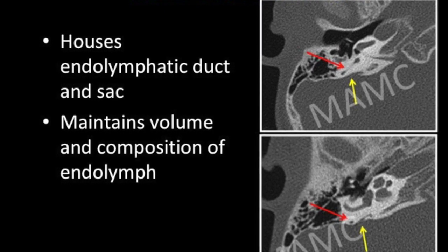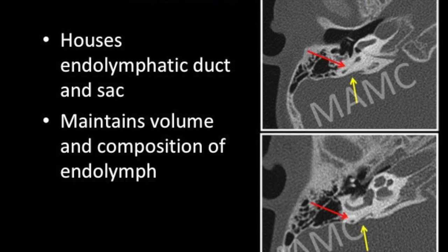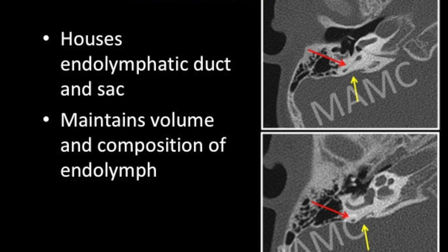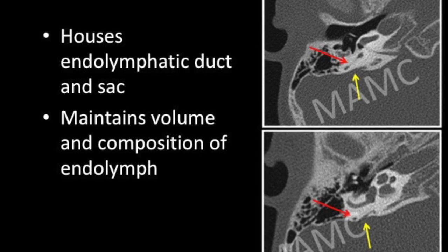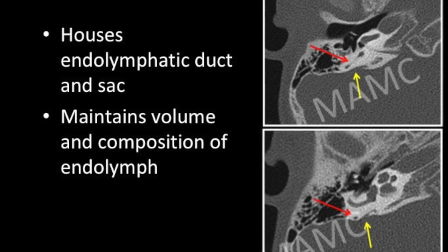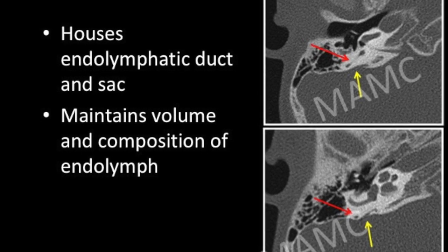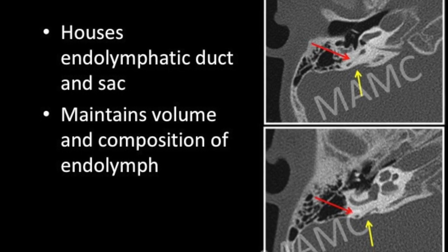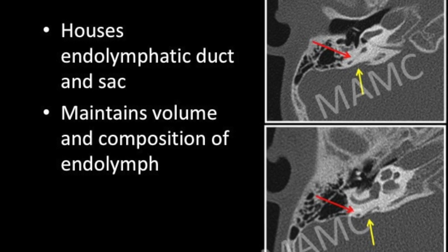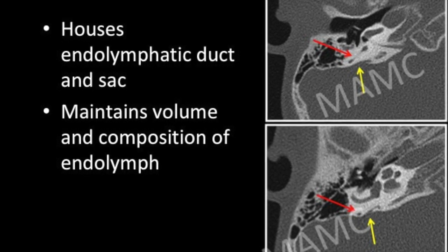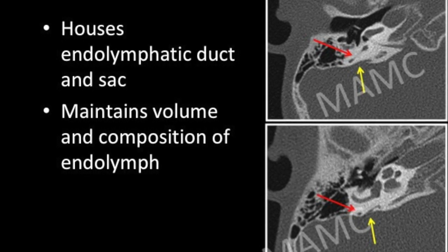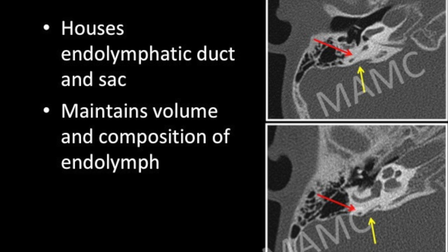The endolymphatic duct and sac help in maintaining the volume and composition of the endolymph. The measurement of the vestibular aqueduct should not generally exceed that of the posterior semicircular canal; beyond this it is considered dilated.